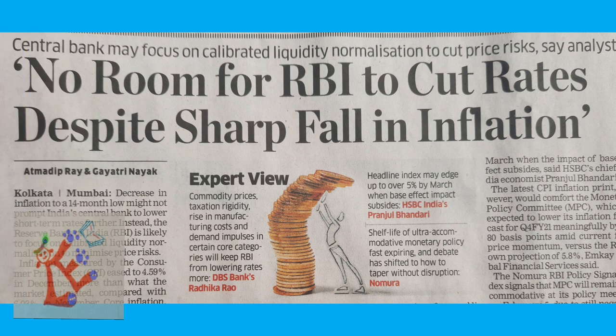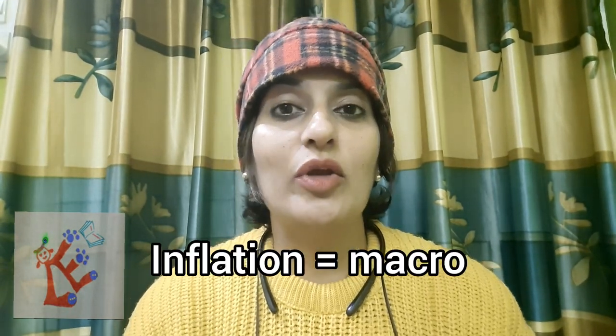The second macroeconomics headline talks about the monetary policy of the RBI, the Reserve Bank of India and central bank of the country. It reads: 'No room for RBI to cut rates despite sharp fall in inflation.' It discusses inflation — the general price level of the entire economy — not the prices of fish or mutton. It also covers monetary policy, which affects the entire economy and not just one or two firms. This belongs firmly to macroeconomics.